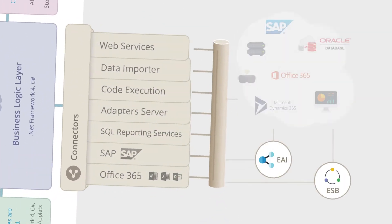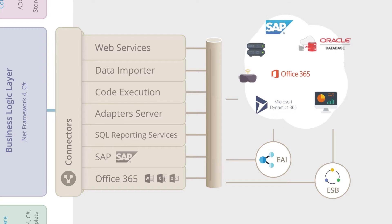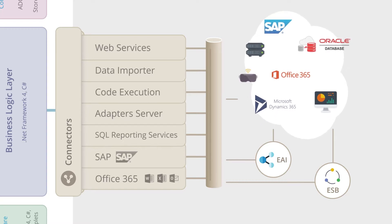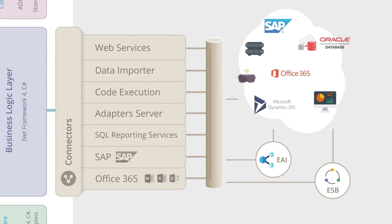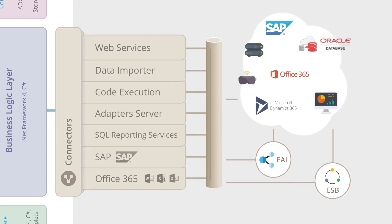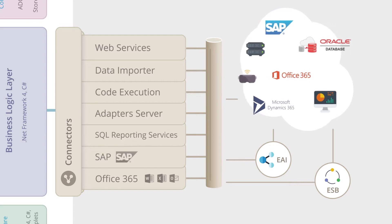Integration modules: Oroportal includes all the components and modules necessary for integration with any external application, such as web services, data importers, execution of scripts, adapter server, SQL reporting services, SAP, and integration with Office 365 services including email, Excel and Word, etc. Furthermore, Oroportal is compatible with enterprise application integration and enterprise service bus.